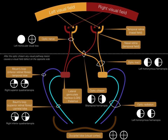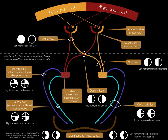Now, if there is a lesion affecting the visual cortex on the right side, what visual field defect would you expect? A left homonymous hemianopia with macular sparing. We can understand why we get a left homonymous hemianopia, but why is there macular sparing? This is because the macular area of the visual cortex is supplied by both the posterior cerebral artery and the middle cerebral artery. If there is an occlusion of the posterior cerebral artery, the middle cerebral artery will provide collateral flow to the macular area of the cortex on that side, which prevents macular visual loss.